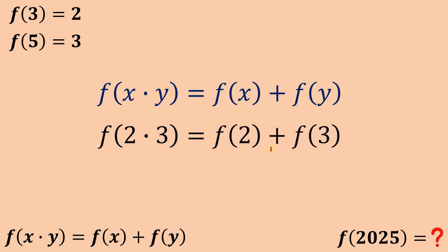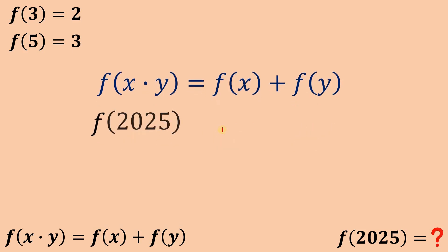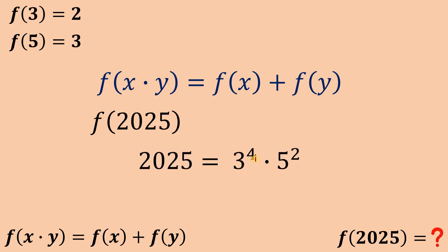So here's the setup. The goal is to find f(2025). Now, one thing is for sure: 2025 is 3 raised to the fourth power times 5 raised to the power of 2. And surprisingly, we have f(3) and f(5) given, so this is the key to answering this question.